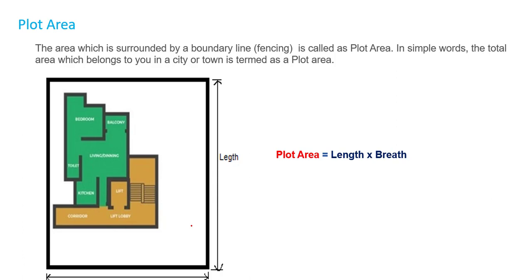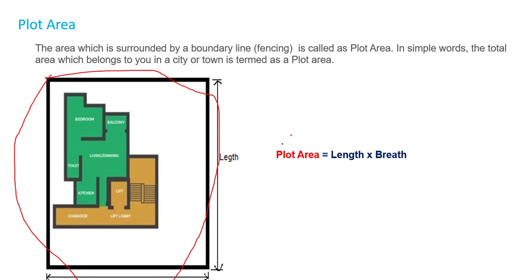In this tutorial we are going to talk about some important terms. The first one is plot area. The area which is surrounded by a boundary line is called plot area. In simple words, the total area which belongs to you in a city or a town is termed as plot area. So let's suppose this is the total area that you own — this will be called plot area, and plot area equals length times breadth.